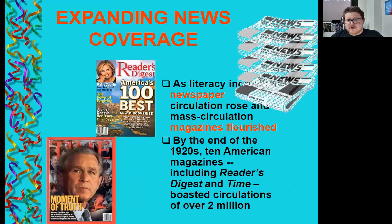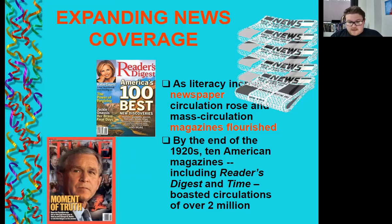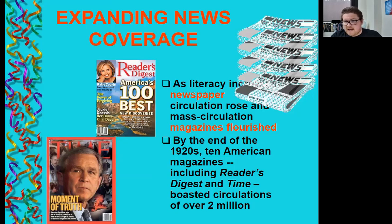As literacy increased, newspaper circulation rose and mass circulation magazines flourished — Time, Reader's Digest, and newspapers in general. By the end of the 1920s, 10 American magazines including Reader's Digest and Time posted circulations of over 2 million. Newspapers had been the main source of news, but if you couldn't read, you got no news. Now that people were going to school and learning to read at a young age, they were able to read newspapers and gather news.